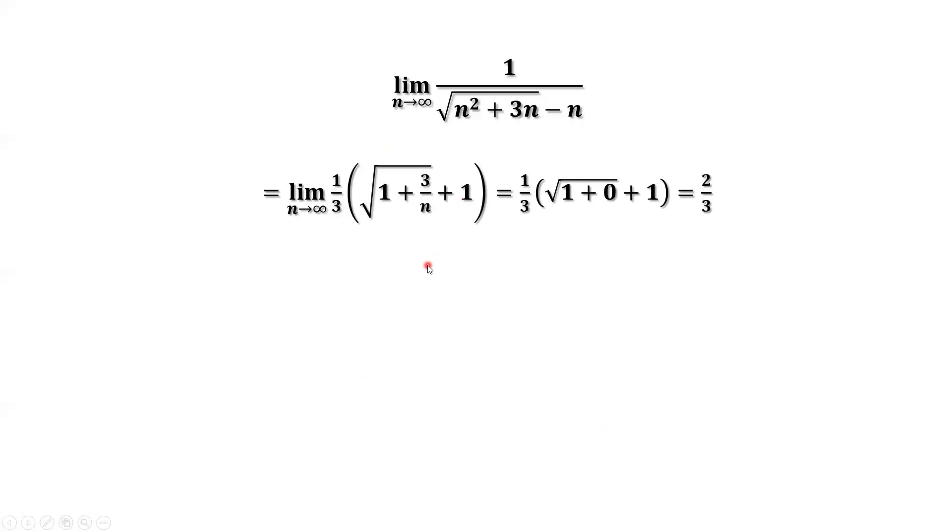Now we are ready to plug in. 1 is a constant. And limit of 3 over n as n goes to infinity—3 over n converges to 0. This is constant. So substitute 3 over n by 0. We can get to the final answer.